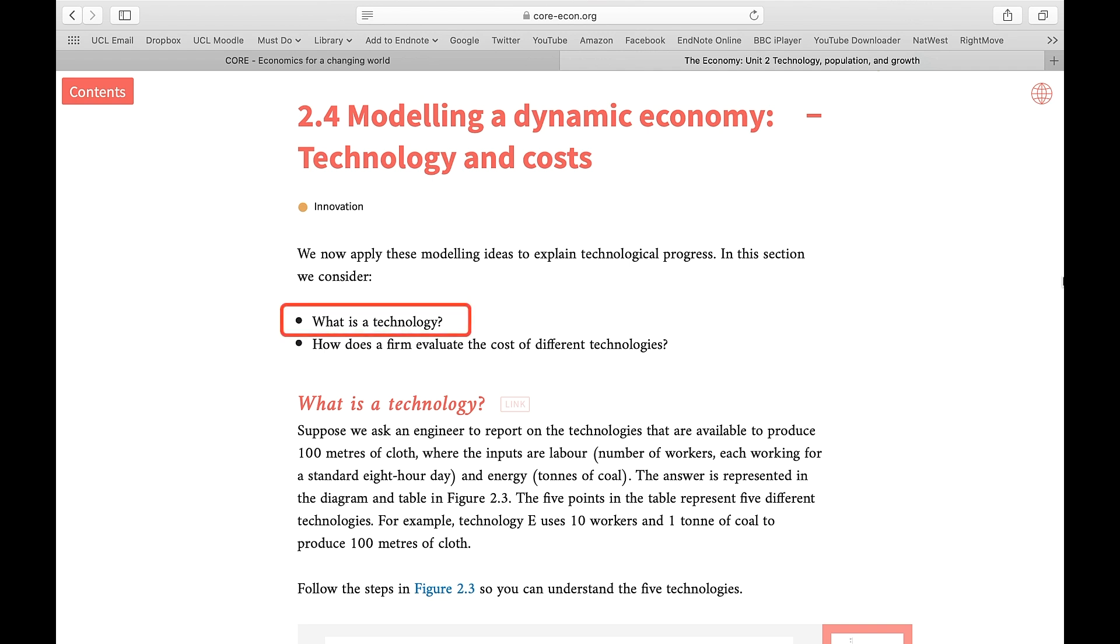The most common mistake about technology is that it is a machine. It's an industrial robot in a BMW factory or a tractor on a farm. No, technology includes machines but goes beyond it. Technology here refers to different ways of producing the same thing.